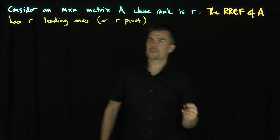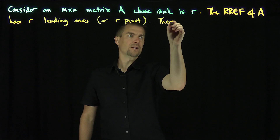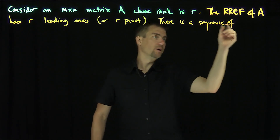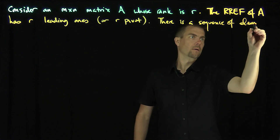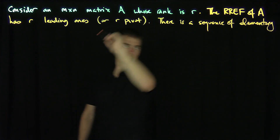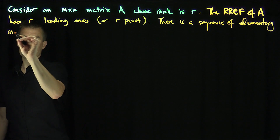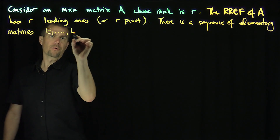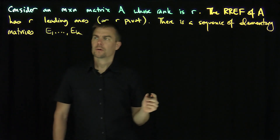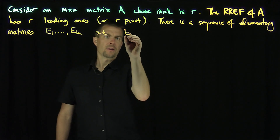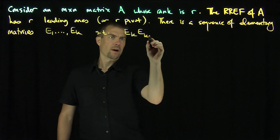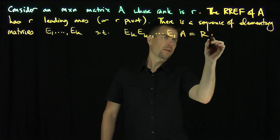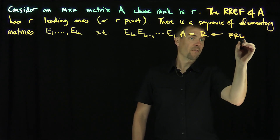What this means is that there exists a sequence of elementary matrices E1 through Ek, such that Ek, Ek minus 1, ... E1 applied to A gives R, and this R is the reduced row echelon form of A.